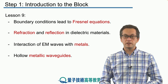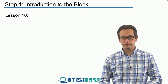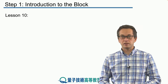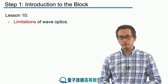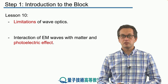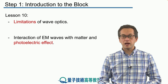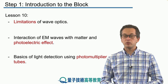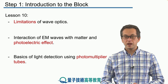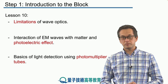Finally, in lesson 10, this will be our first jumping off point into quantum mechanics. We will start to consider limitations of wave optics and, in particular, the photoelectric effect — how light interacts with matter — and we will discuss why wave optics cannot explain many of the phenomena we can actually observe in everyday life and in the laboratory. We will conclude the lesson with basics of light detection, and in particular we will talk about photomultiplier tubes. So, let's begin.